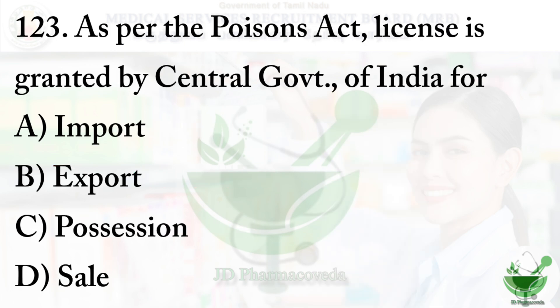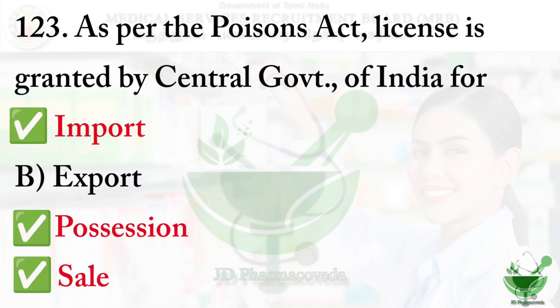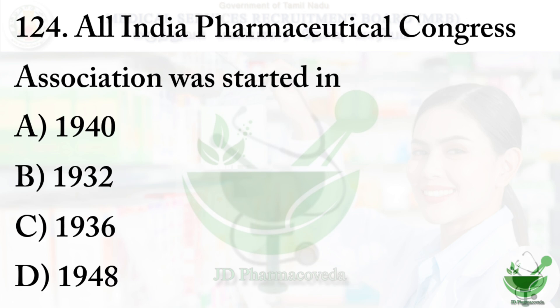Question 123: As per the Poisons Act, the license is granted by the Central Government of India for — Option A: import, option B: export, option C: possession, option D: sale. The right options are A, C, and D — it permits import, possession, and sale of poisonous drugs.